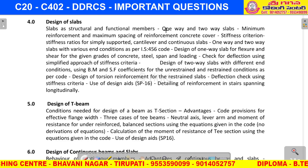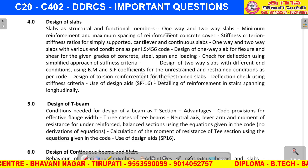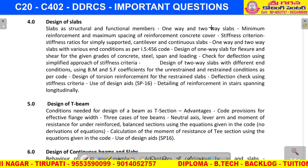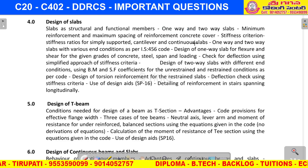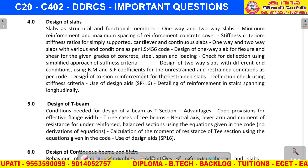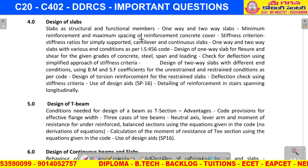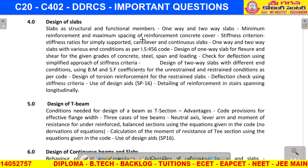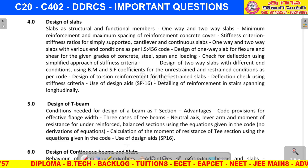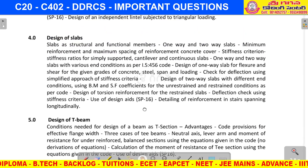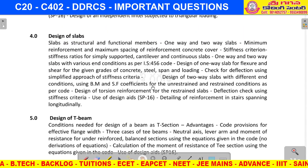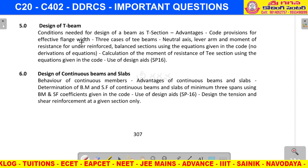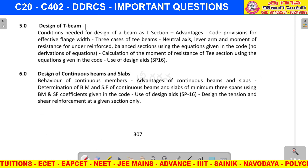There are two types of slabs. The design of one-way slabs is very, very easy. Using the code book, you can use the alpha values. The design procedure is straightforward. One-way slab design and T-beam slab design also appear as short answer questions.